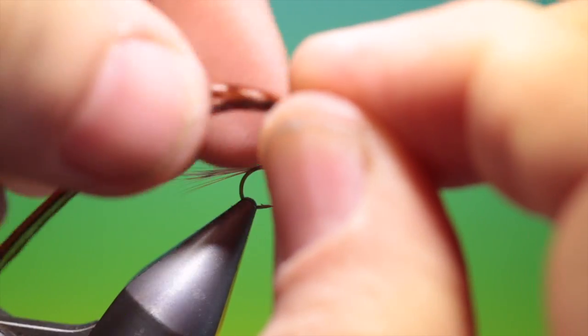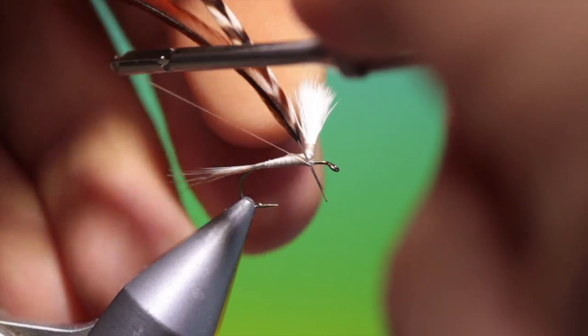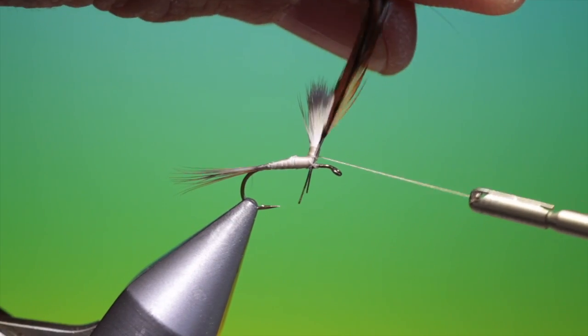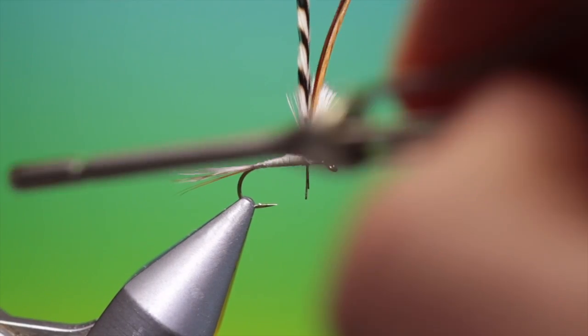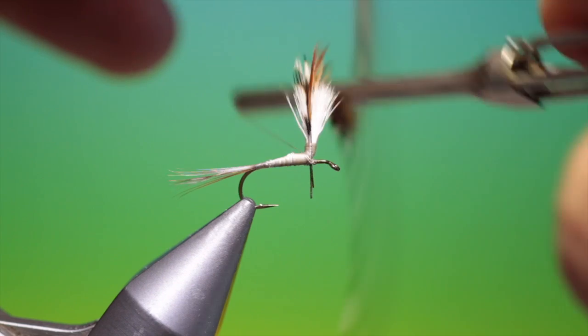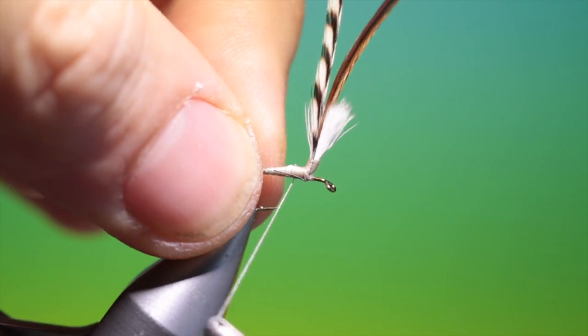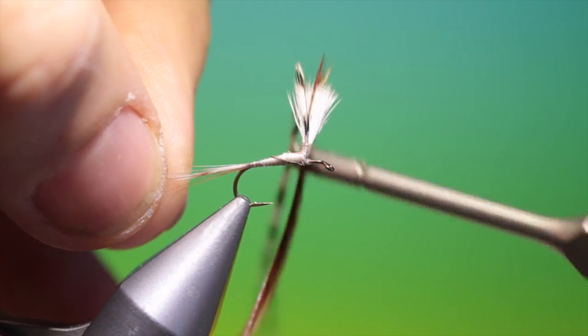And then I've prepared two saddle hackles. One grizzly, one brown. Hold these back to back. Now you want to make sure that you have clean stem all the way up the hackle to tie to the post. And secure this all the way up to the top of the post. Like so. And then we can go back down again. And we can lock off the hackle stems. Like so. And go back right to the tail base.